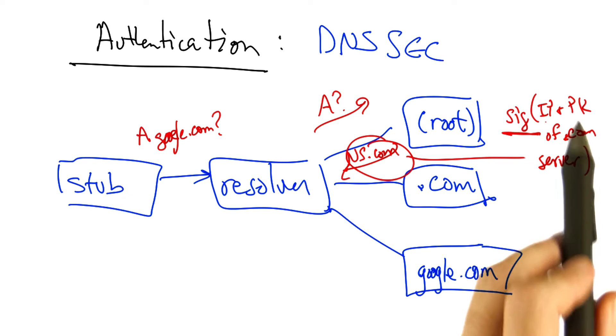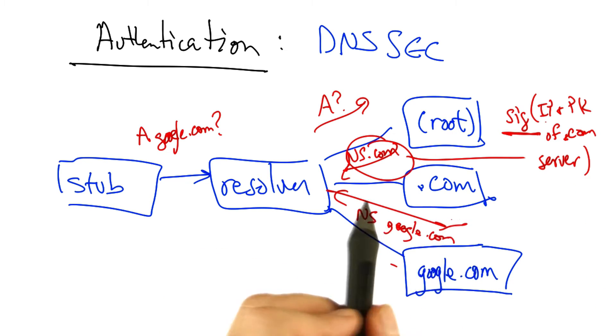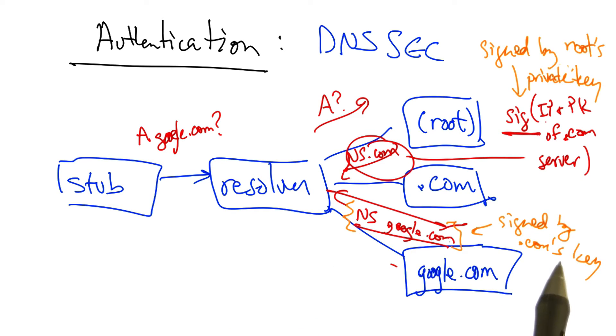It also now knows the public key corresponding to the .com server. Thus, when the .com server sends the next referral to google.com, that referral is signed by .com's private key.